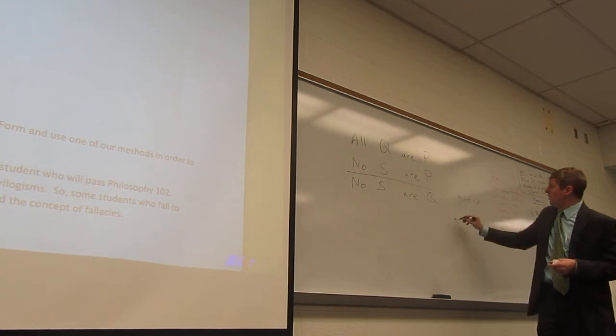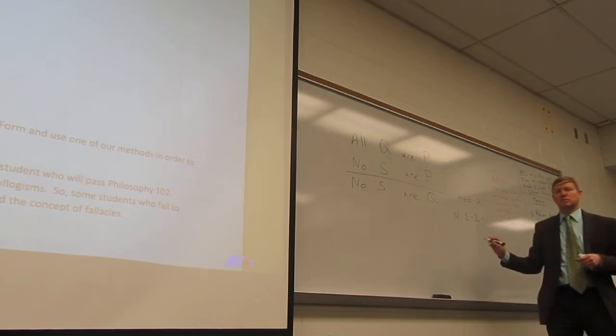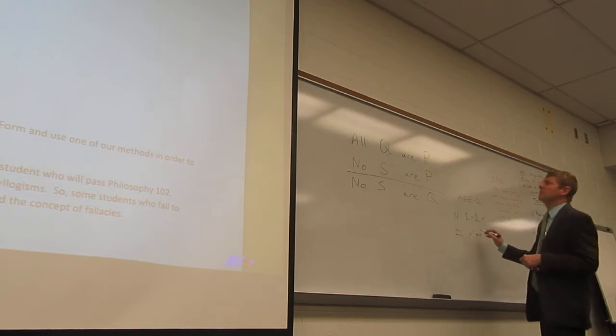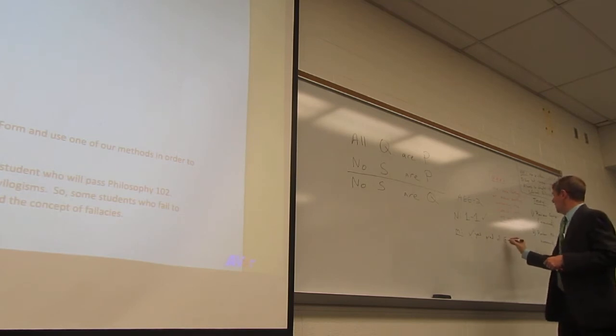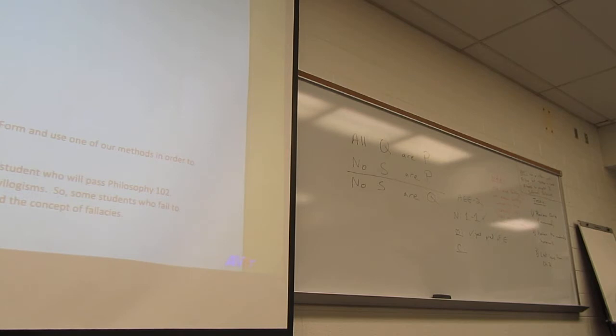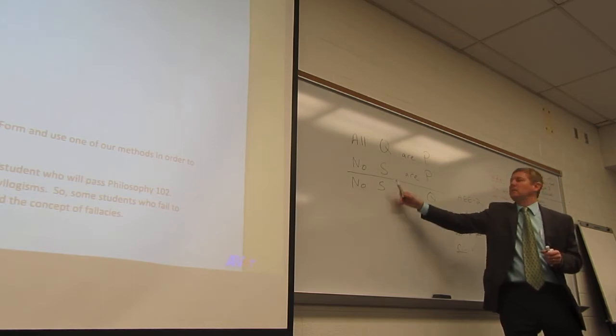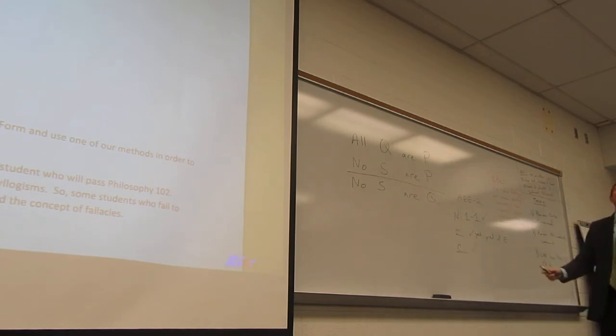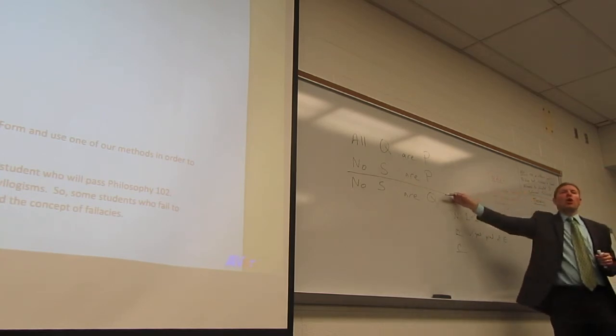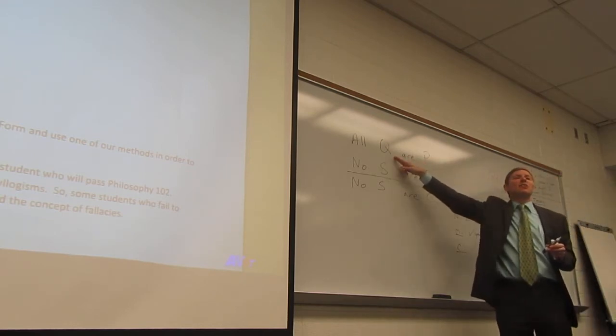We got one negation here, we got one negation here, so it passes the negation rule. Does the middle term distribute? Yes, and that's as the predicate of an E. Now our conclusion requires two terms to distribute because our conclusion is an E, so it requires both of them to be distributed. In this case, S is the subject of an E, and in the premise it's also the subject of an E, so that distributes. In our conclusion, Q is the predicate of an E, which distributes. It distributes here as the subject of an A.